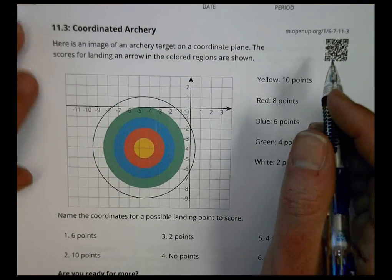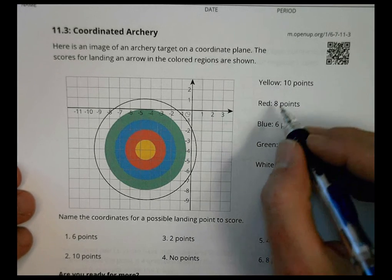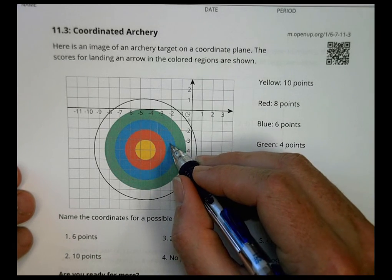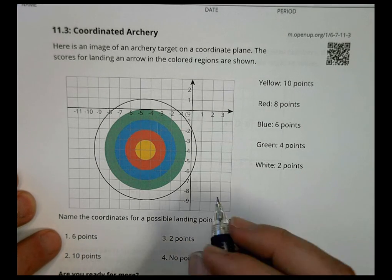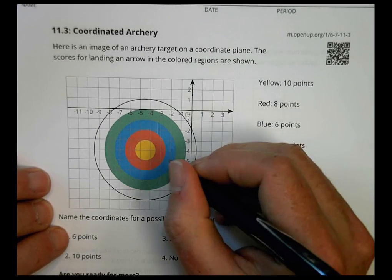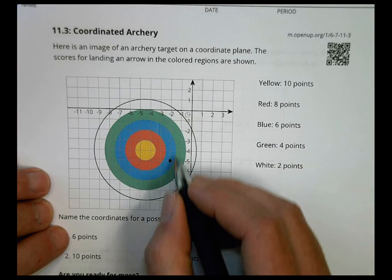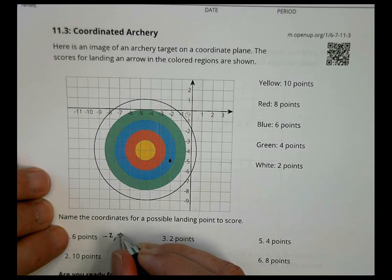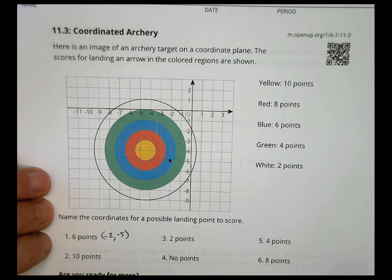Here's an image of an archery target on a coordinate plane. The scores for landing an arrow in the colored regions are shown. We have 10 points if you're on yellow, 8 for red, 6 there, 4 there, and 2 there. Name the coordinates for a possible landing point to score 6 points. So what we want to do here is just plot a point somewhere in that right color. 6 is blue, and so you can really pick any place you want. Here's a blue point right there. And so that coordinate for that one is going to be located at negative 2, negative 5. Are there other options? Sure there are. There's a point here, a point there. There are many other blue points you could choose from.